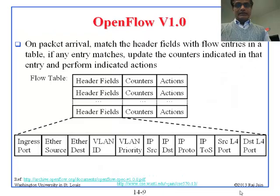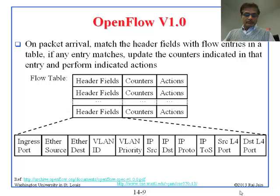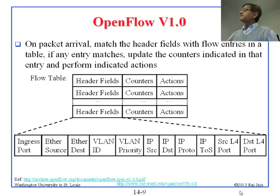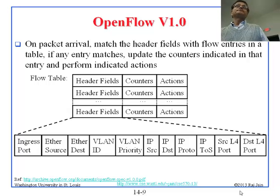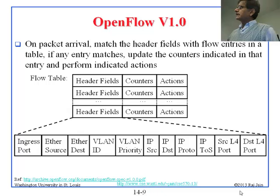In OpenFlow version 1.0, on packet arrival the flow table is consulted. The flow table has three fields: header field, counters, and actions. The header field is used for matching and includes: ingress port (the physical interface the packet came from), source Ethernet address, destination Ethernet address, VLAN ID, VLAN priority, IP source, IP destination, IP protocol type, IP type of service, and TCP/UDP port numbers.